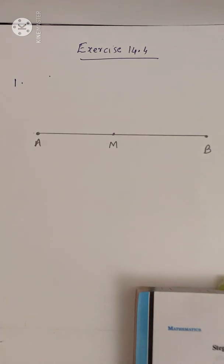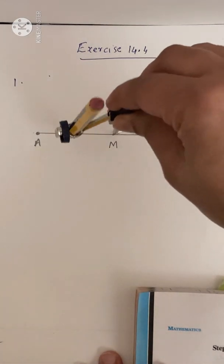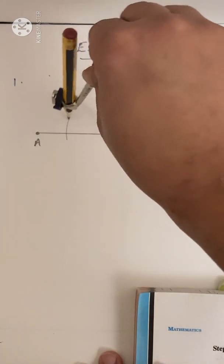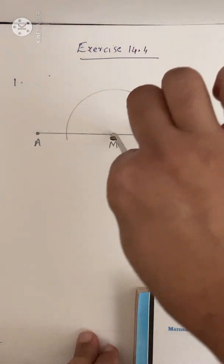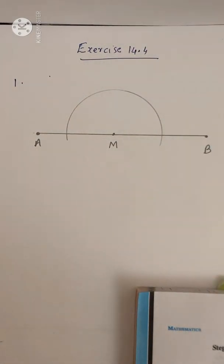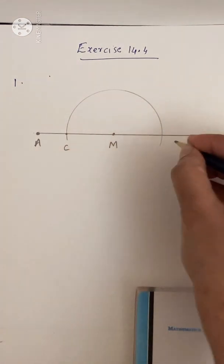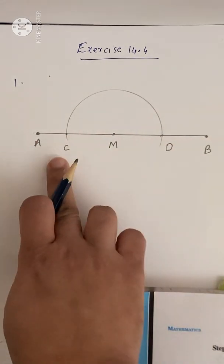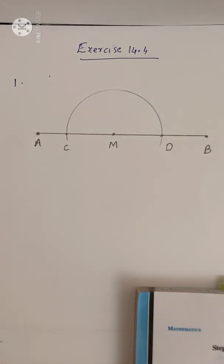To do this, use the compass and pencil. Take M as center and draw a semicircle such that the two ends touch the line segment AB. Mark the two intersecting points as C and D, where the semicircle intersects line segment AB.